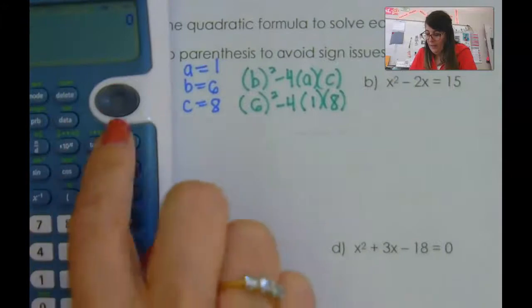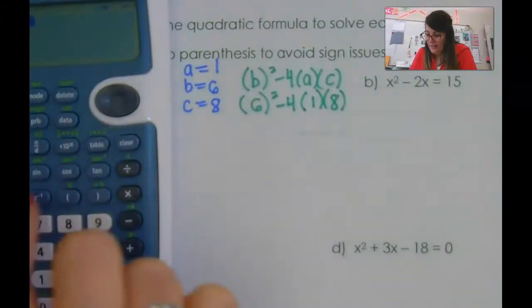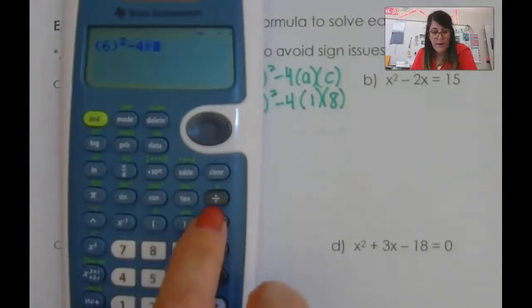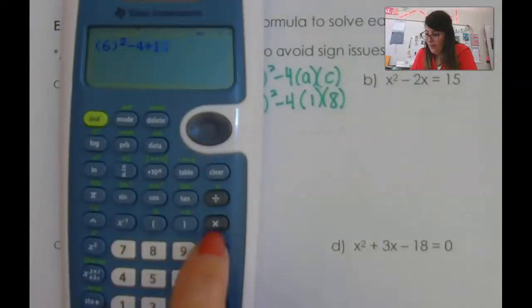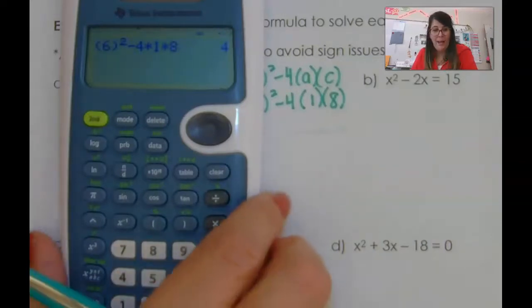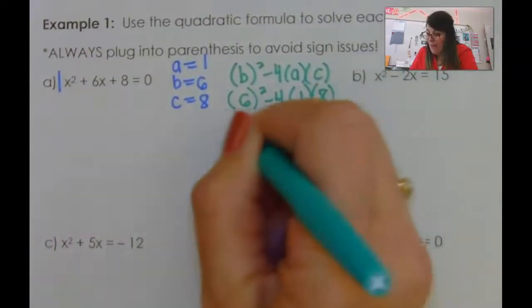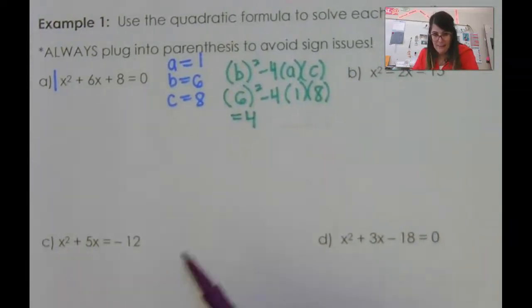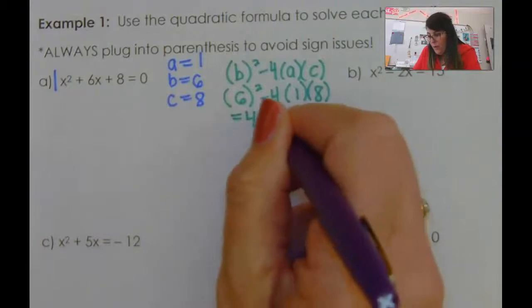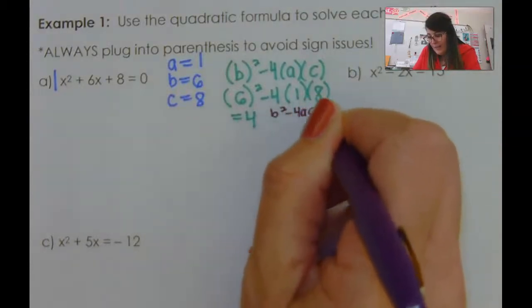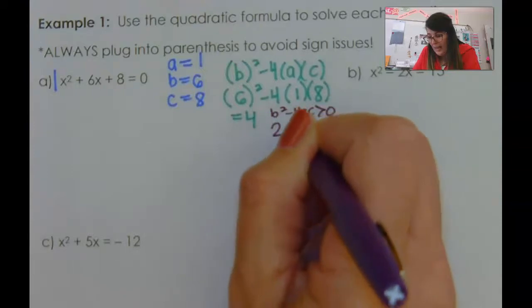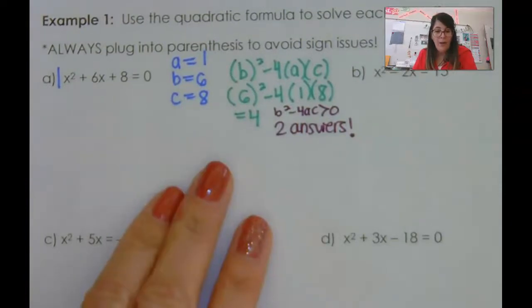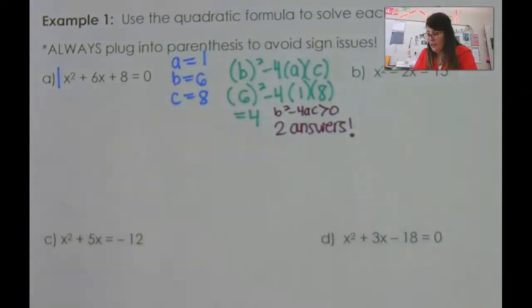So this is going to be 6 squared minus 4 times 1 times 8. I take my calculator and enter 6 squared minus 4 times 1 times 8, and I get positive 4. So my discriminant is equal to 4. That is bigger than zero, so because b squared minus 4ac is greater than zero, I know I'm going to be getting two answers when I do the quadratic formula.